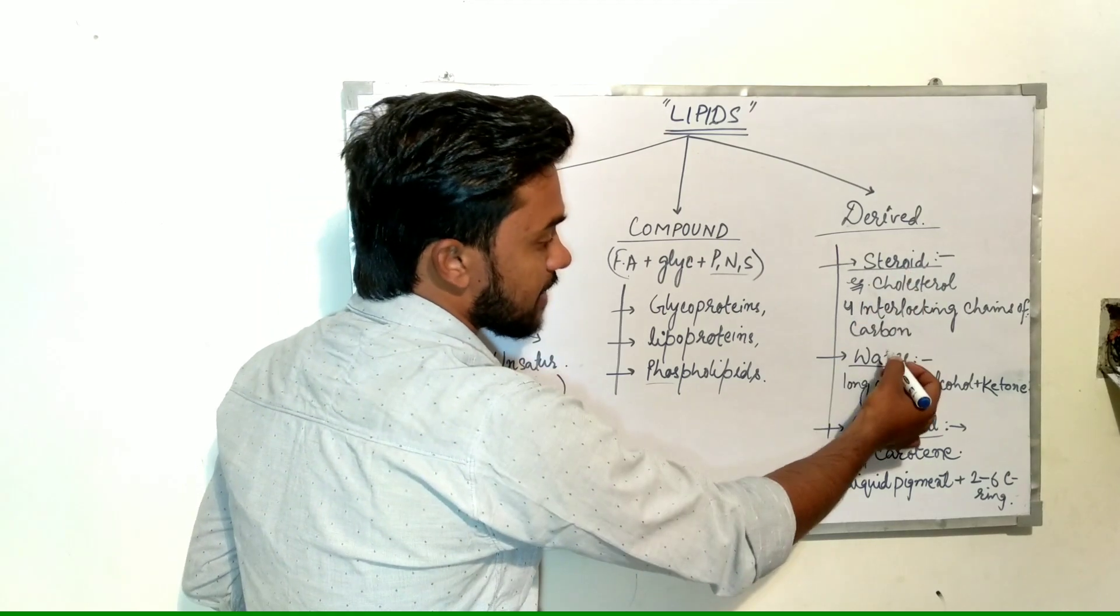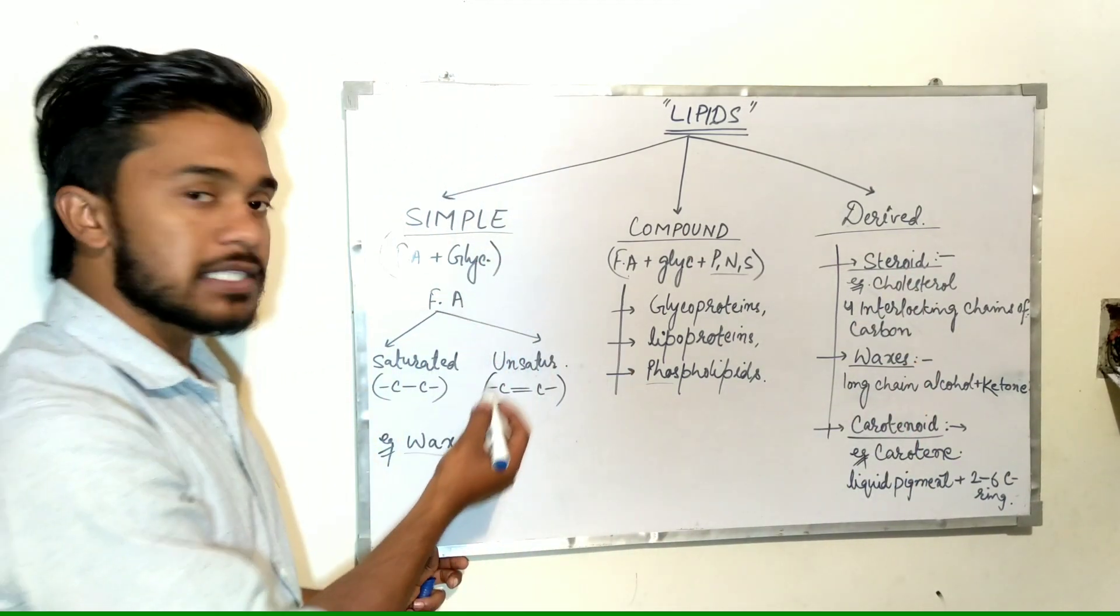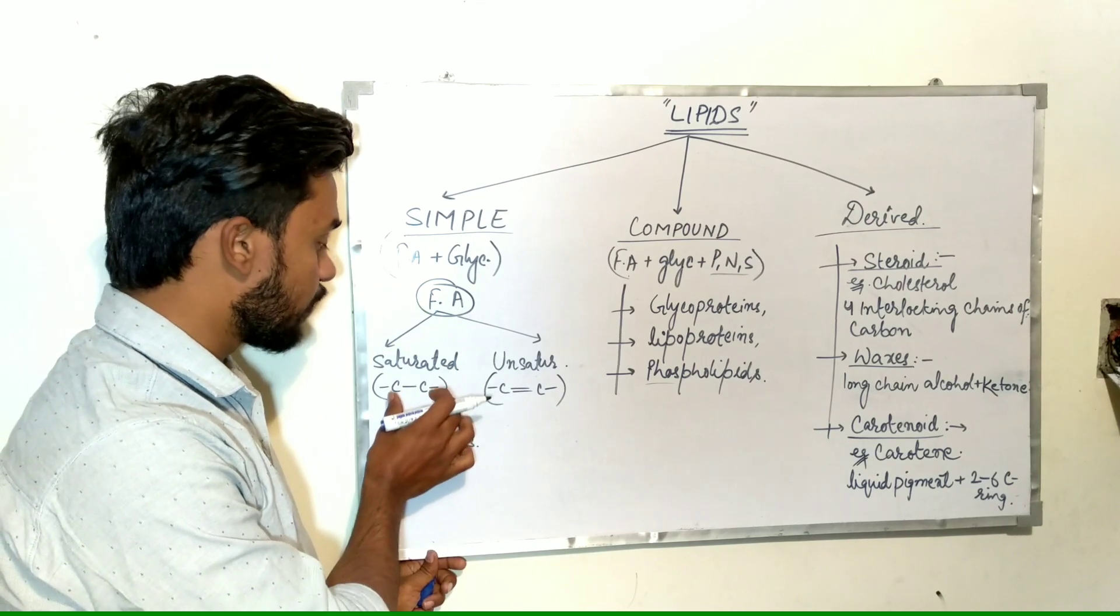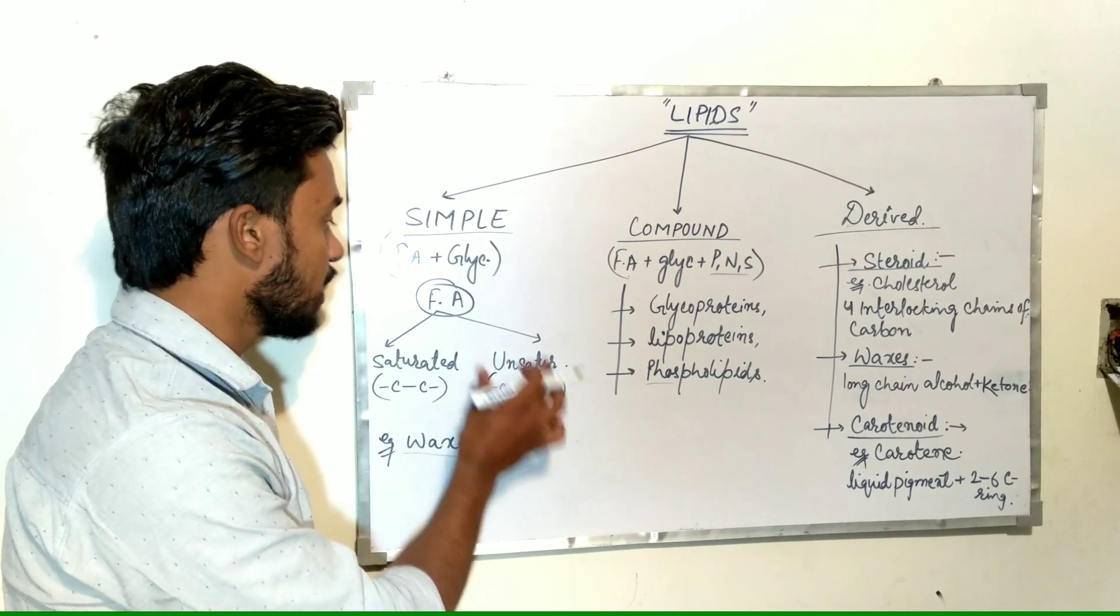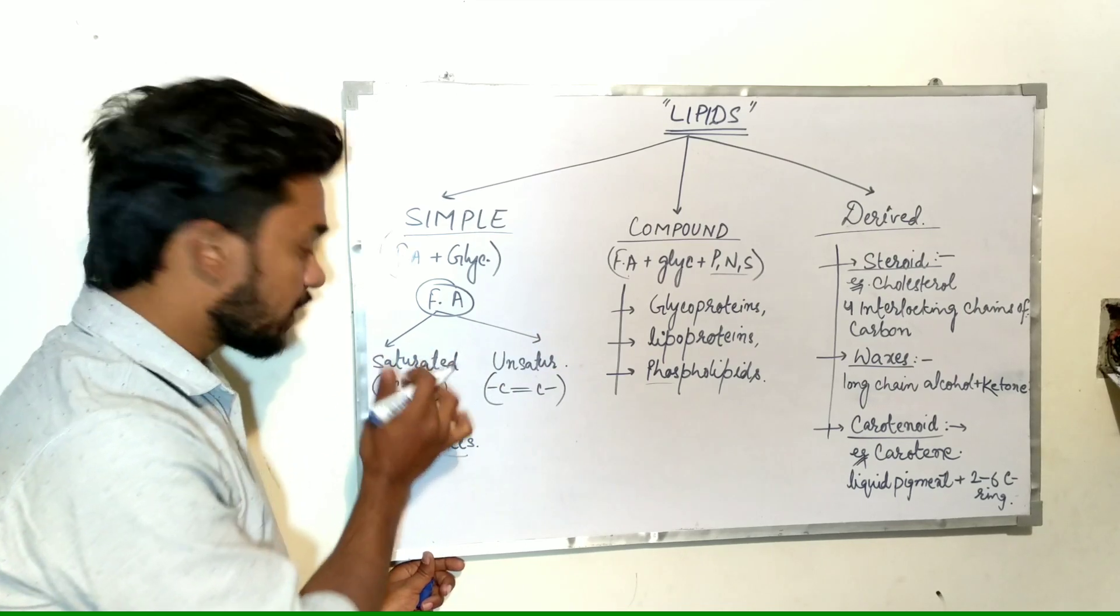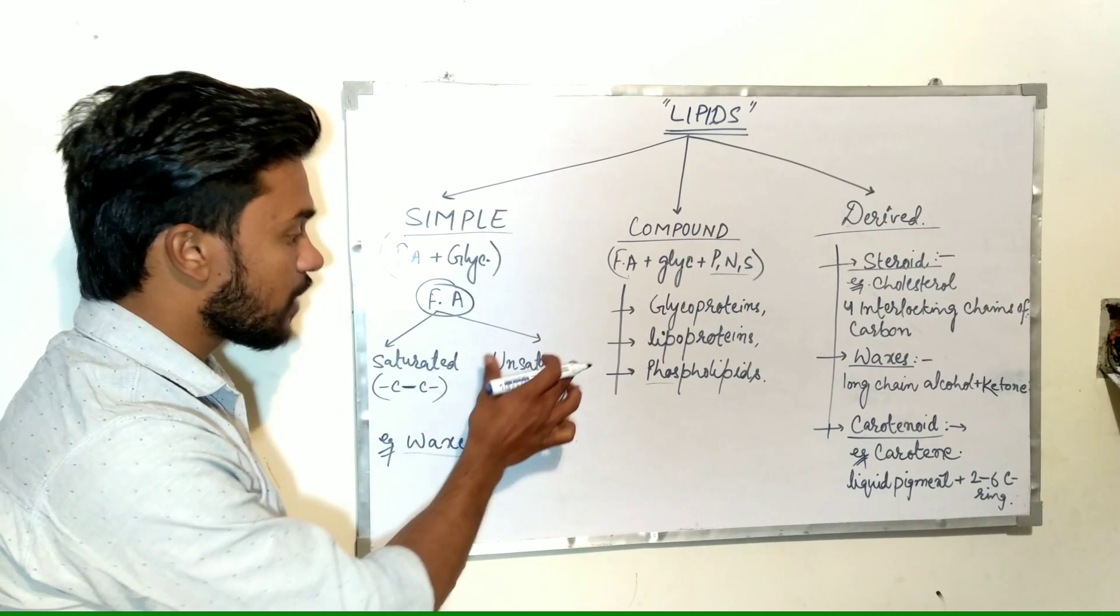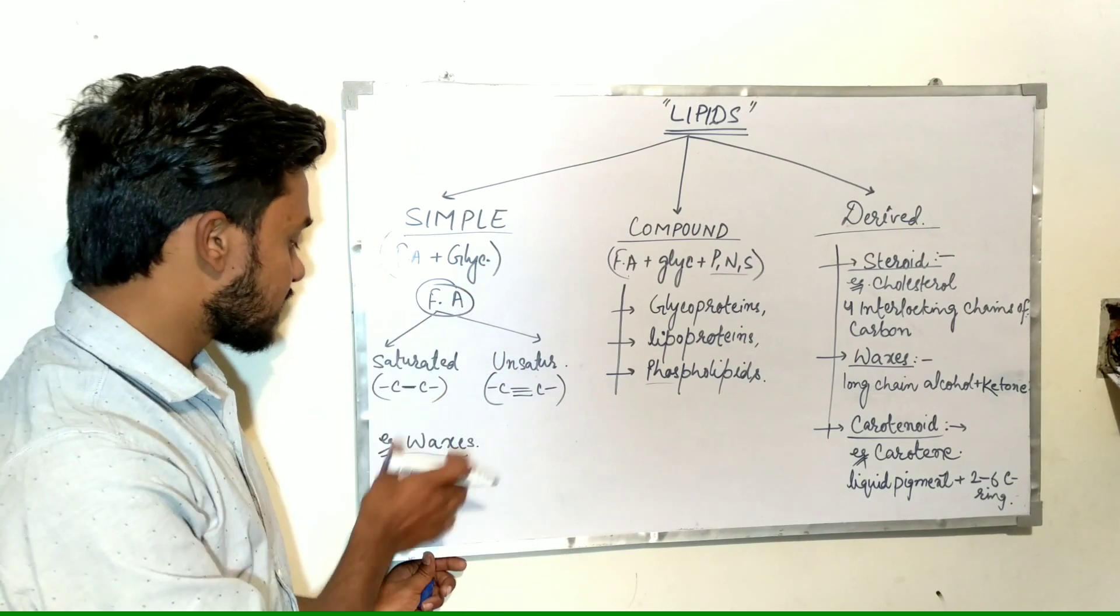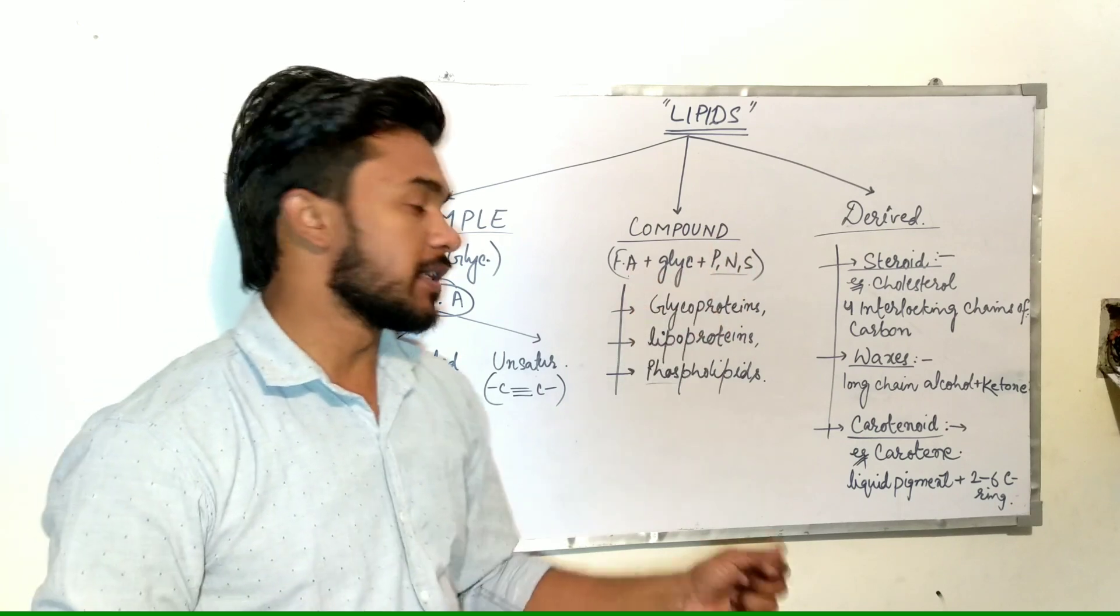Examples include steroids, waxes, carotenoids. Simple lipids contain fatty acids. The fatty acids, on the basis of type of bond, may be saturated or unsaturated. Saturated fatty acids contain only single bonds in their structure, while unsaturated fatty acids contain double or triple bonds. An example is waxes.